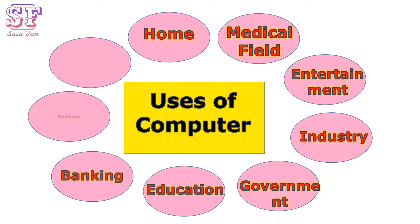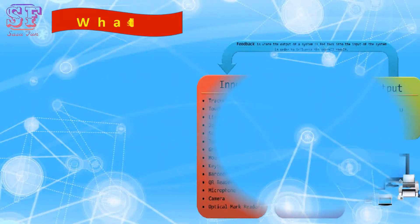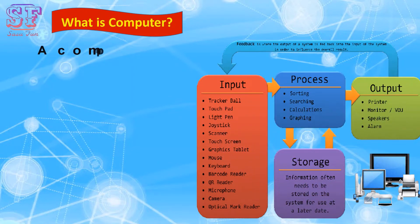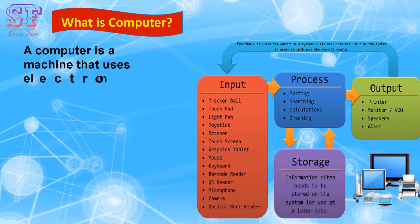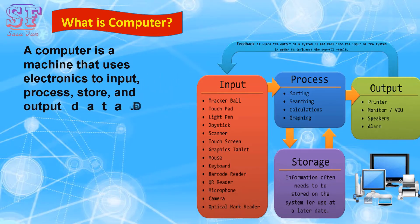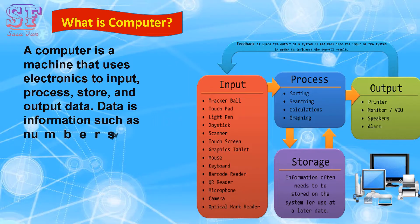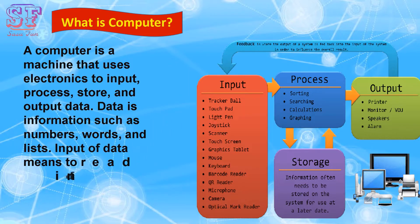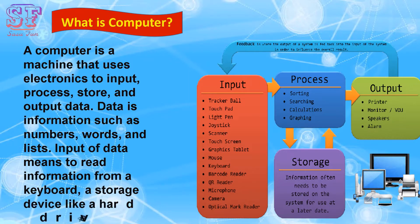Now let us first understand what a computer is. A computer is a machine that uses electronics to input, process, store, and output data. Data is information such as numbers, words, and lists. Input of data means to read information from a keyboard, a storage device like a hard disk or hard drive, or a sensor.